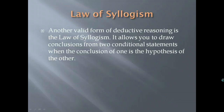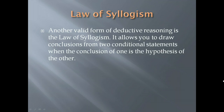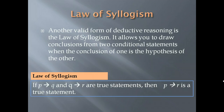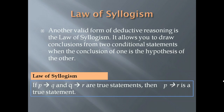Another valid form of deductive reasoning is the law of syllogism. It allows you to draw conclusions from two conditional statements when the conclusion of one is the hypothesis of the other. The law of syllogism states: if P implies Q and Q implies R are true statements, then P implies R is a true statement. This is similar to: if A = B and B = C, then A = C.